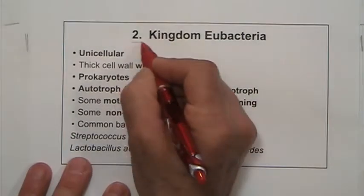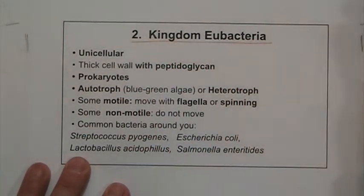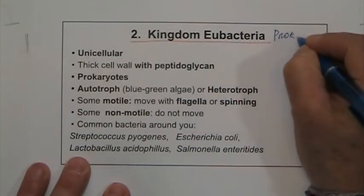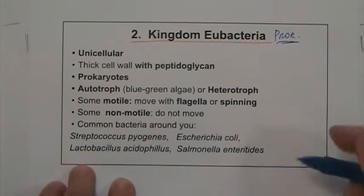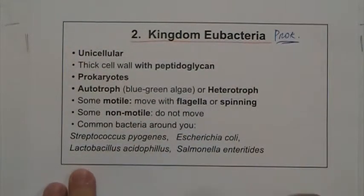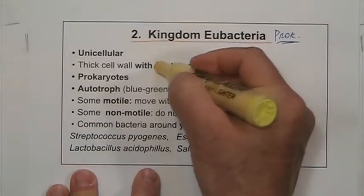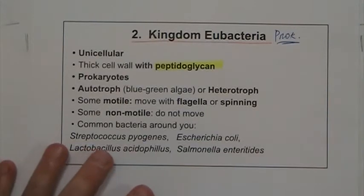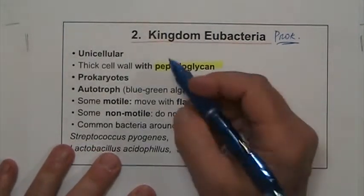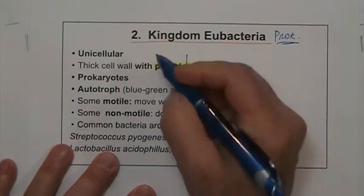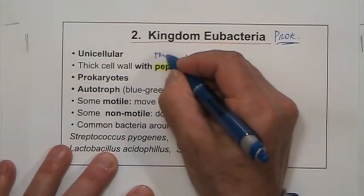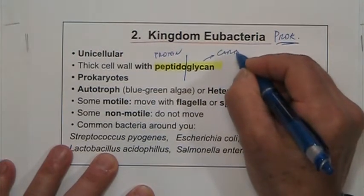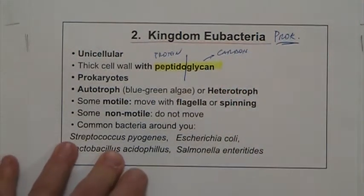The other group is the kingdom Eubacteria — they are also prokaryotes with prokaryotic cells. Everything is technically the same, but here these organisms have the compound peptidoglycan in their cell wall. Peptido means protein and glycan means carbohydrate, so it is a molecule that has both.